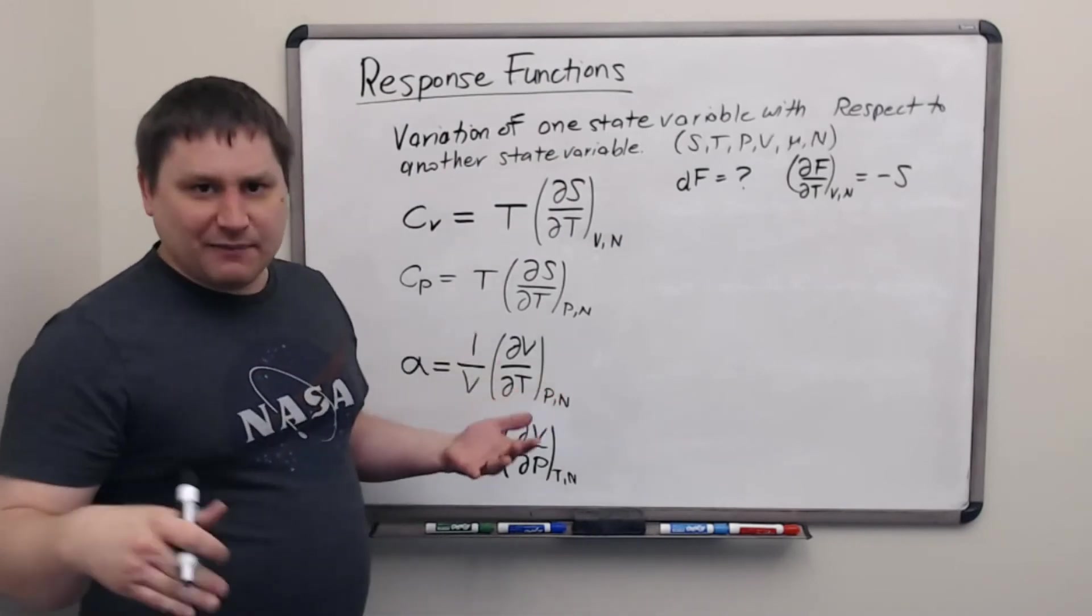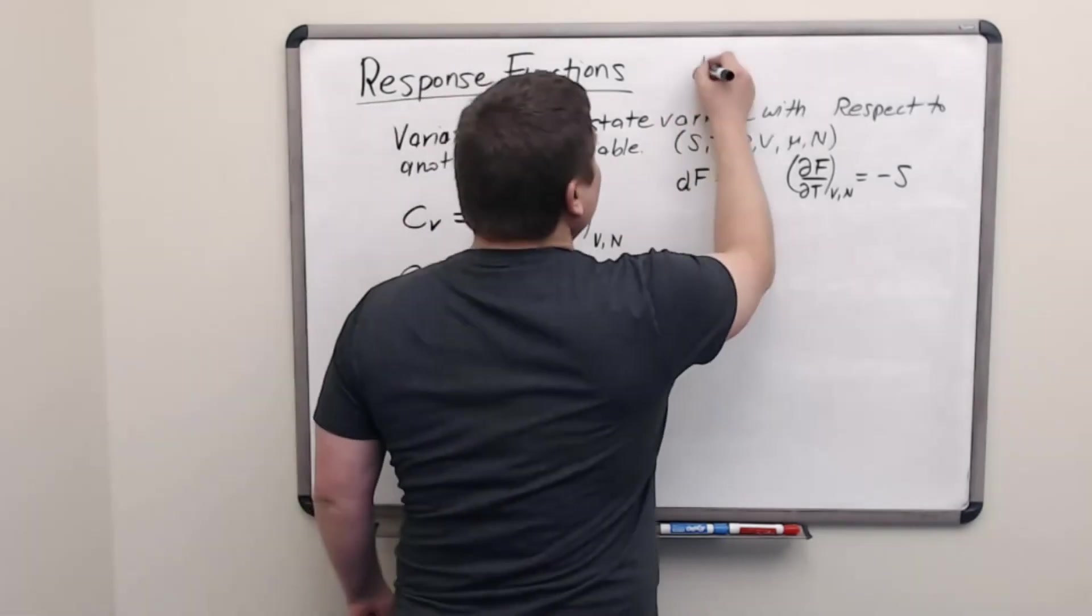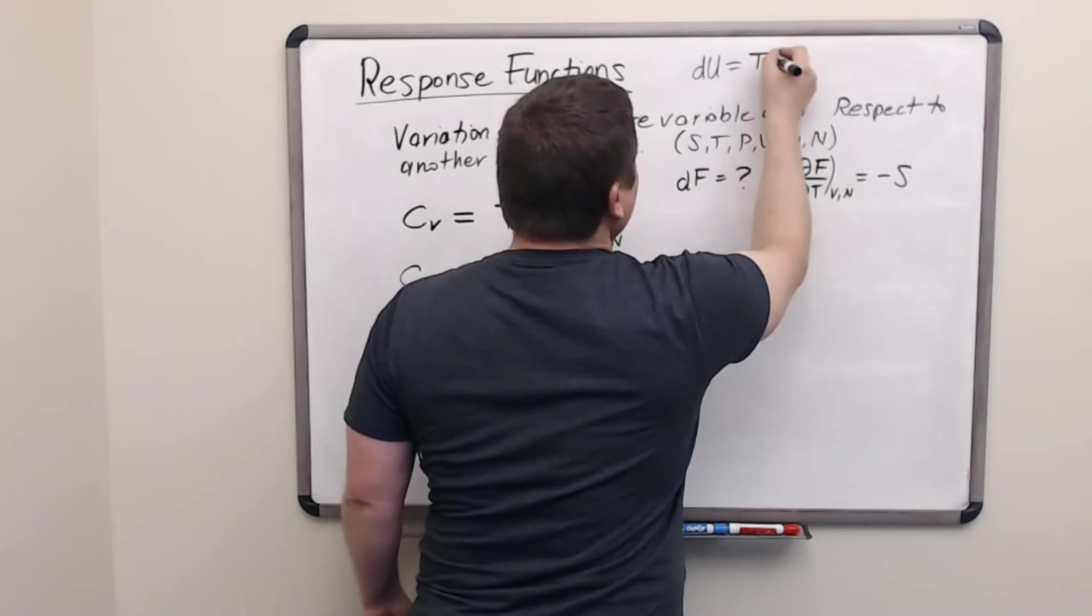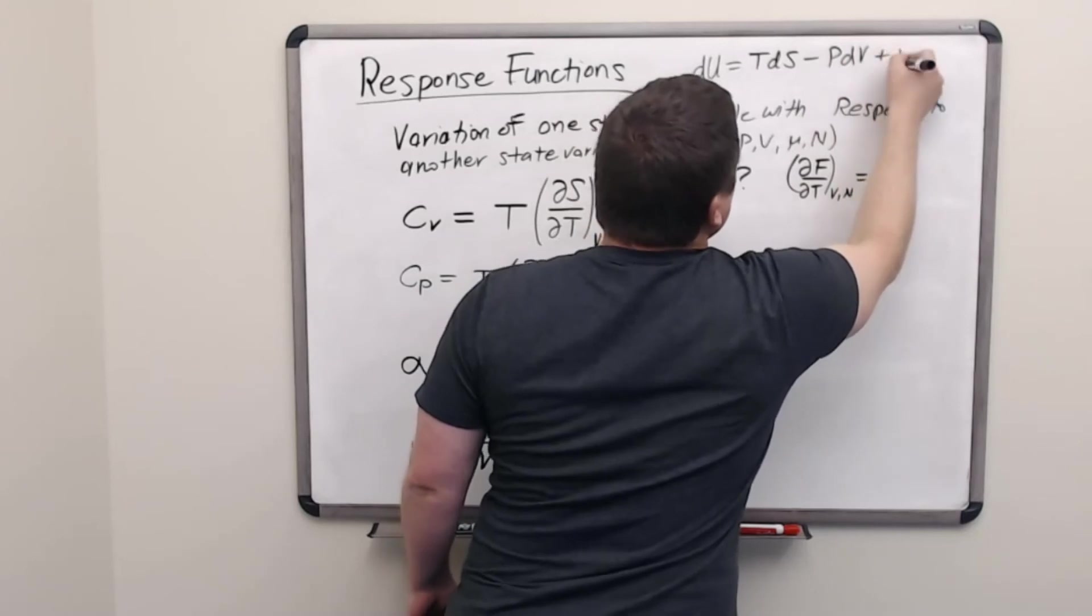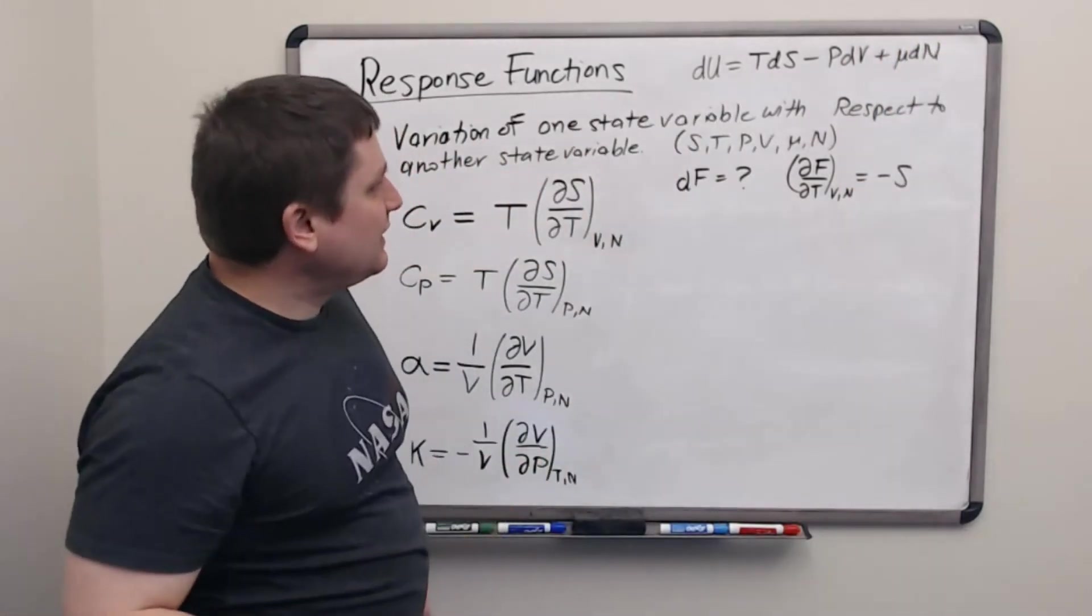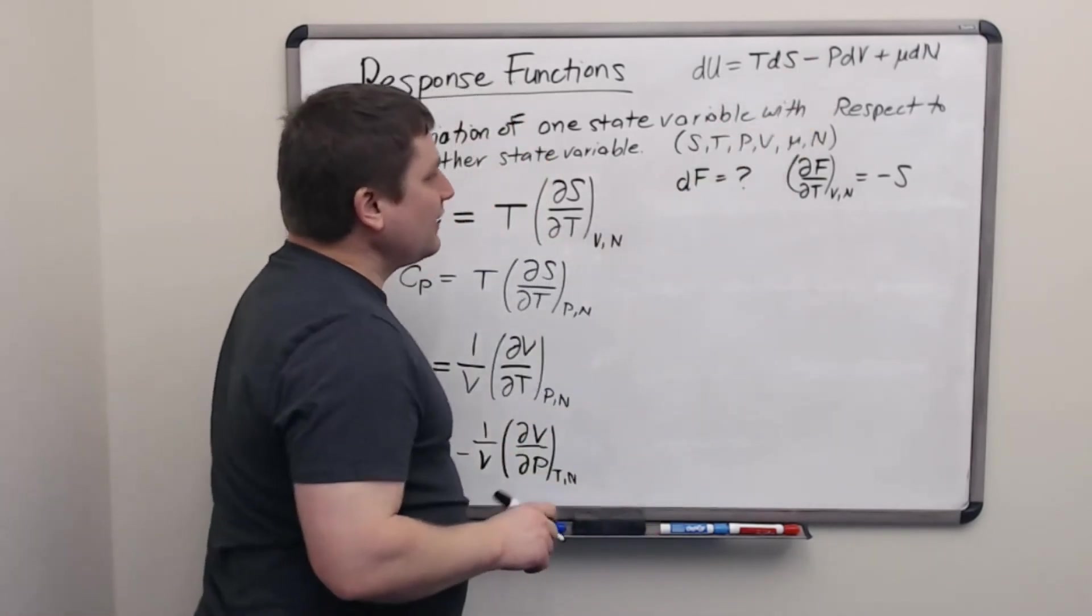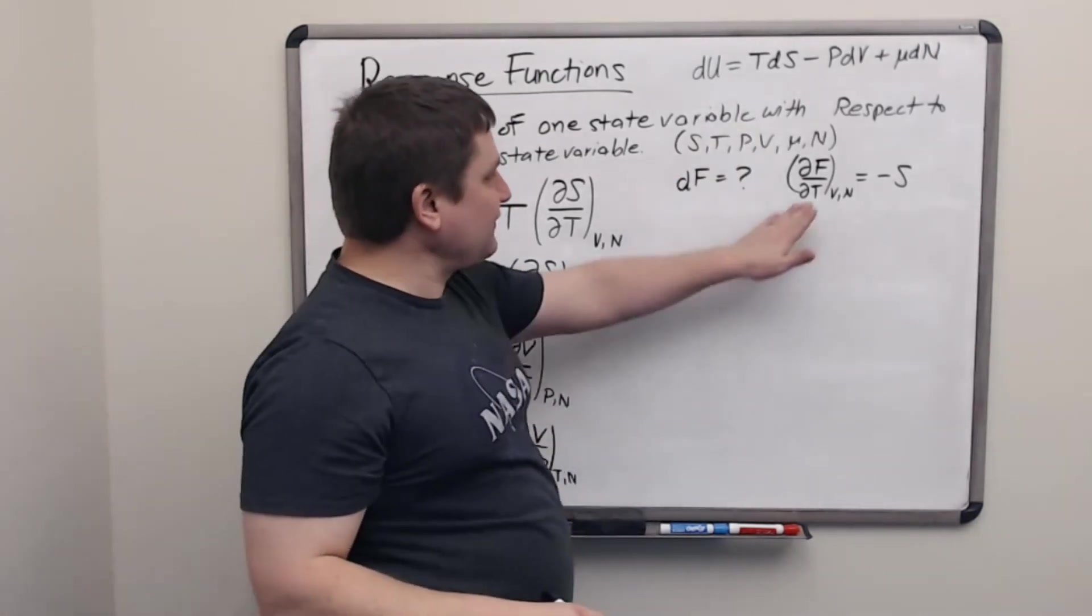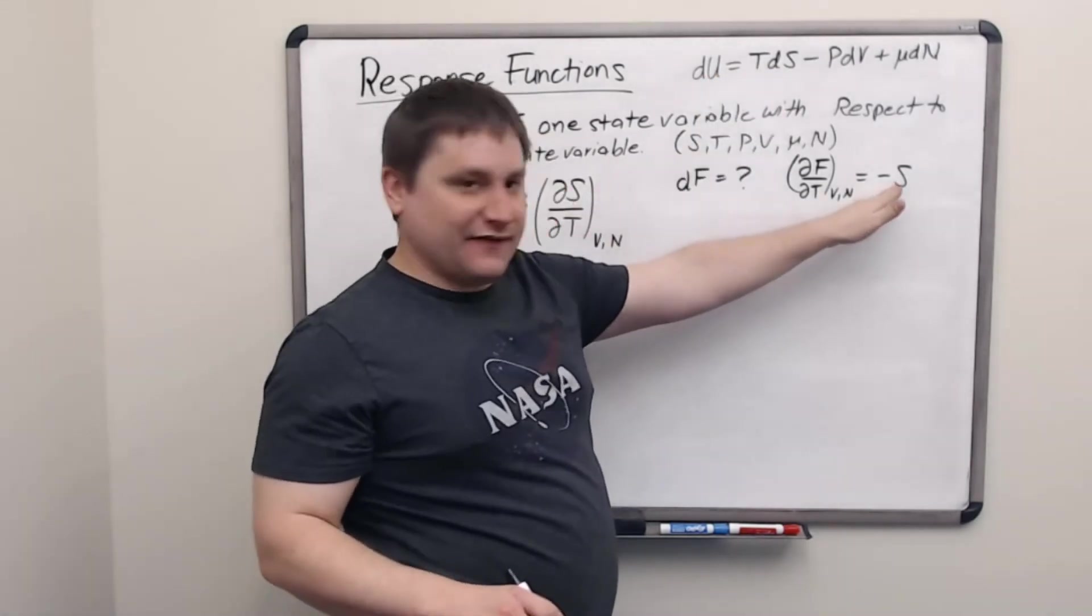My little mnemonic for memorizing those is, I always remember that the fundamental thermodynamic identity for the internal energy is all extensive differentials and they're all positive except for pressure. So when I go to a different thermodynamic potential, if I change variables from S to T, then it flips the sign of that term. So that's how I know there's going to be a negative S here.